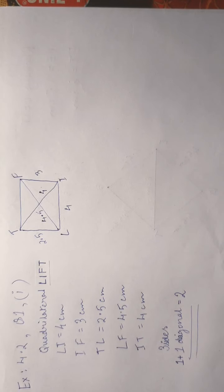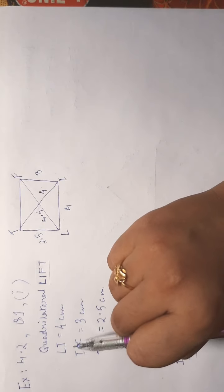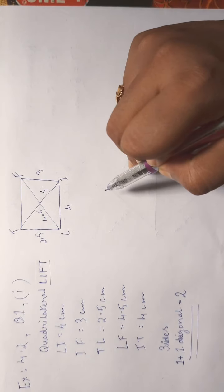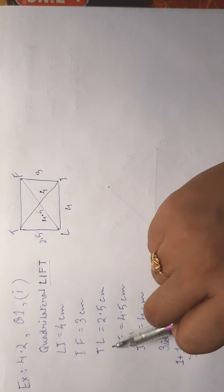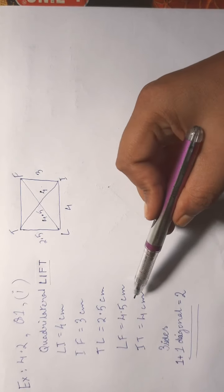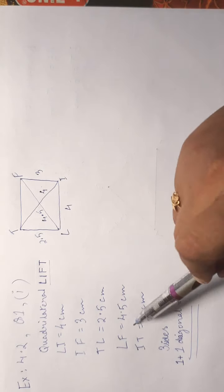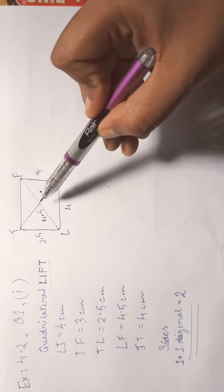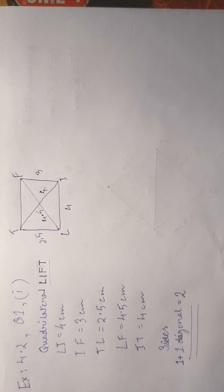Let us draw the quadrilateral and name it LIFT. LI is 4 centimeters, IF is 3 centimeters, TL is 2.5 centimeters — so three sides are given. The remaining two are diagonals: LF is 4.5 centimeters and IT is 4 centimeters.